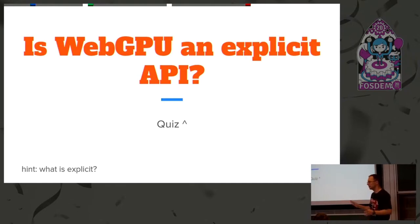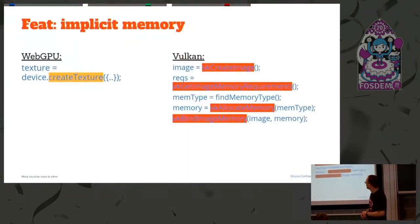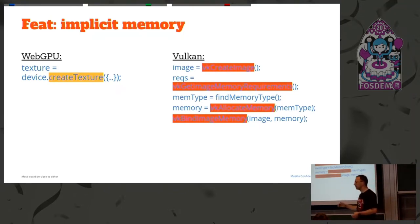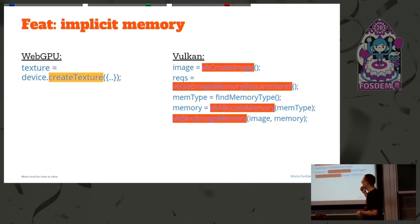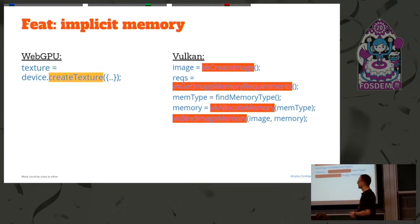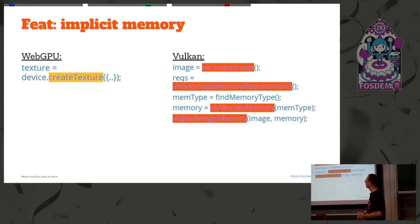Explicit APIs is a long topic. In Vulkan, in order to create an image you have to go through four or five steps: you figure out the requirements, create a logical image, find your memory pools, allocate memory, and bind them to the image. There's a lot going on, and people make mistakes all the time. In WebGPU, it's just one command. Of course, by hiding this, we introduce some level of uncertainty — maybe you won't have enough memory and we'll have to allocate more. This is the balance we've reached.